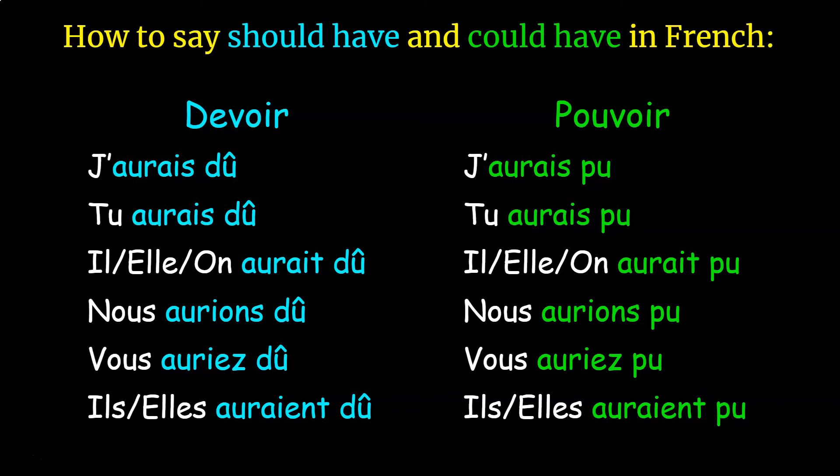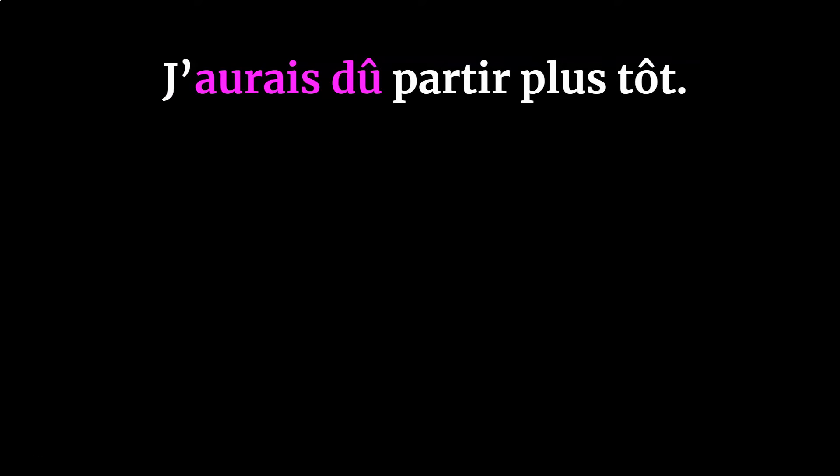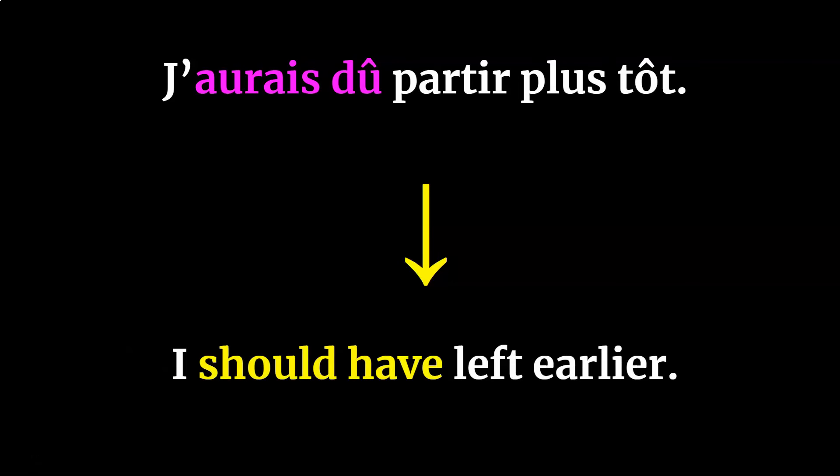To say 'could have': j'aurais pu, tu aurais pu, il/elle/on auraient pu, nous aurions pu, vous auriez pu, ils auraient pu, and elles auraient pu. For example: j'aurais dû partir plus tôt, which translates to 'I should have left earlier.'